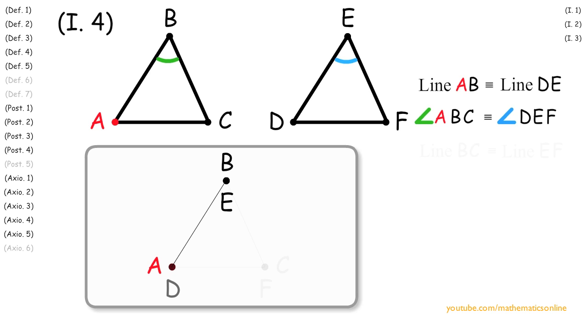Next, since we are given angle ABC is congruent to angle DEF, this means that the straight line BC must coincide exactly with the straight line EF.